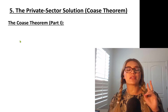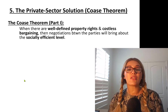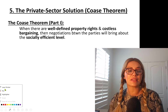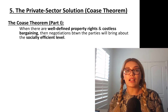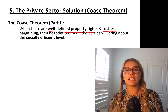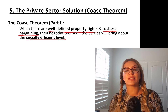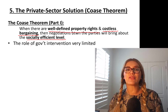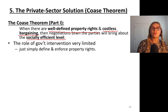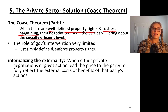Coase theorem has two parts. Part one says that when there are well-defined property rights and costless bargaining, then negotiations between the parties will bring about the socially efficient level. So the role of government is very simply to enforce and define property rights and then let the parties bargain. This is called internalizing the externality.